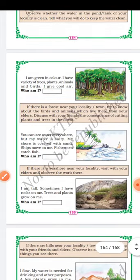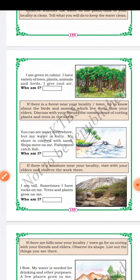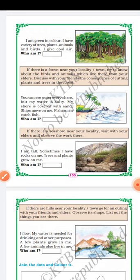Here is another riddle on page 155. I am green in color. I have a variety of trees, plants, animals and birds. I give cool air. Who am I? Yes, it is a forest. A forest is a piece of land with many trees. Many animals need forests to live and survive. Forests are a breath of fresh air — they keep things cool and help the soil stay put.